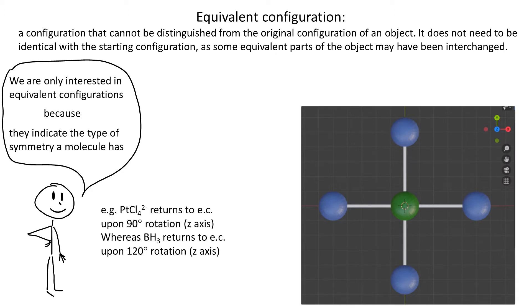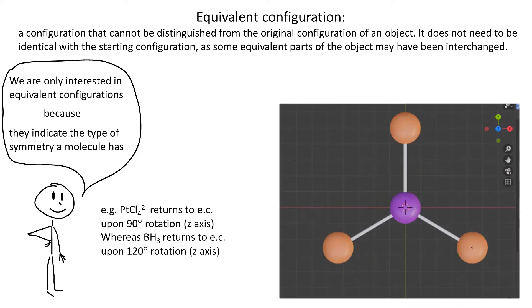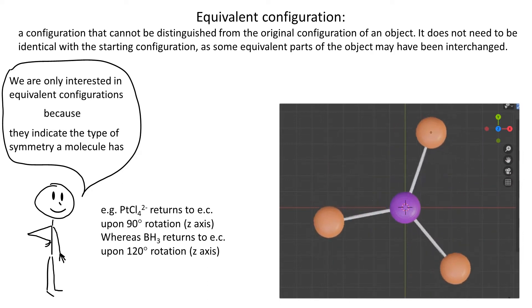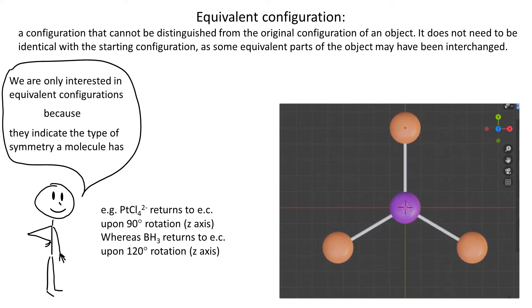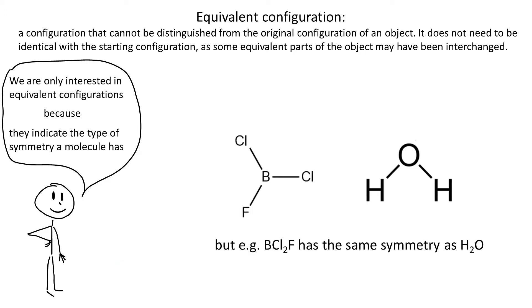For example, tetrachloroplatinate 2 returns to an equivalent configuration by rotation by 90 degrees, but trihydroboron BH3 returns to an equivalent configuration by rotation by 120 degrees — so these two molecules have different symmetries. On the other hand, dichlorofluoroborane BCl2F has the same symmetry as the water molecule. You will be able to notice and justify that at the end of this video.